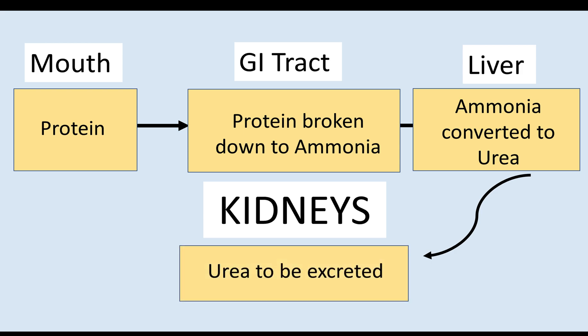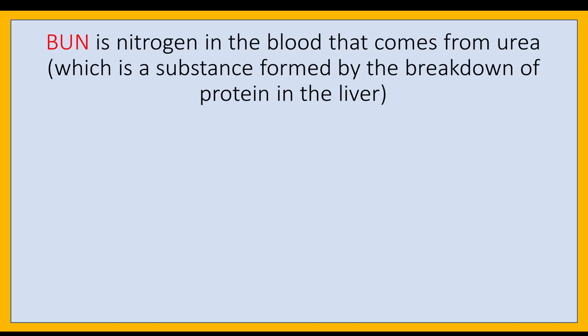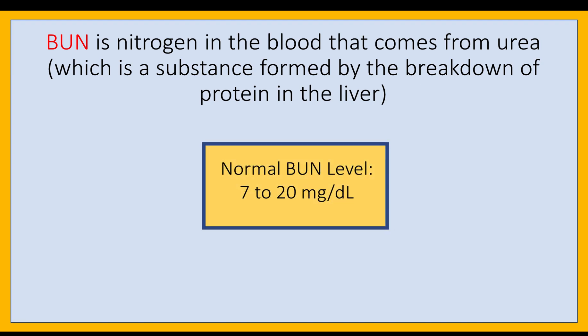Thus, BUN is nitrogen in the blood that comes from urea. The normal BUN level is 7 to 20 mg per deciliter. A common blood test, the blood urea nitrogen test, reveals important information about how well your kidneys are working. A BUN test measures the amount of urea nitrogen that's in your blood.